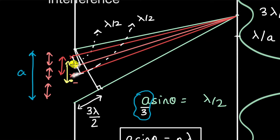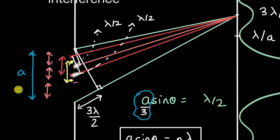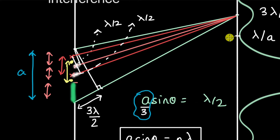So the top section cancels with the middle section — they destructively interfere with each other. The top two-thirds of the slit do not contribute anything to the intensity at the first maxima. Only the bottom one-third of the slit contributes. This is why the first maxima is much weaker than the central maximum: at the central maximum the entire slit contributes constructively, whereas here only one-third of the slit contributes.